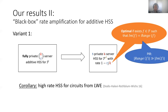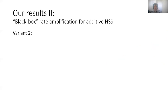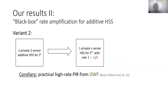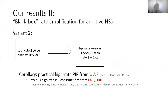As a corollary, we obtain a high-rate HSS scheme for circuits based on LWE. Moving on to a second variant of this black-box approach, we show how to convert a one-private two-server additive HSS for some function class to a one-private K-server HSS with rate 1 minus 1 over K. This is somewhat surprising because it is sufficient to start from a one-private two-server HSS to obtain an HSS scheme with optimal rate. As a corollary, we obtain practical high-rate PIR from one-way functions.